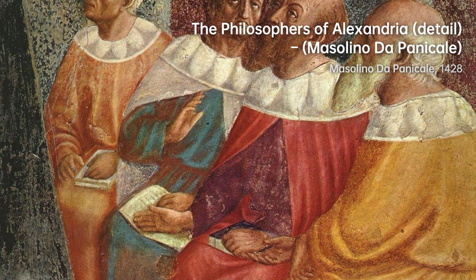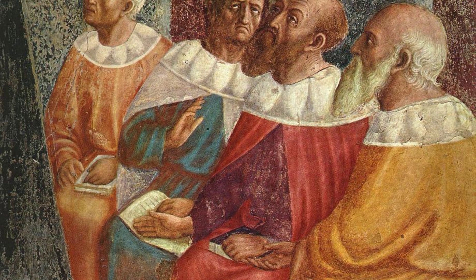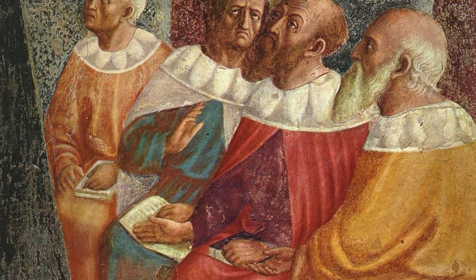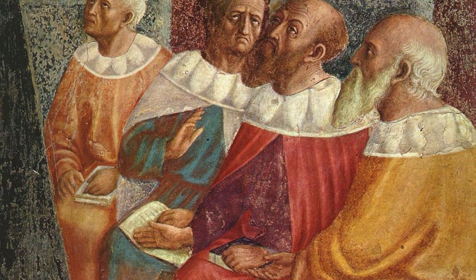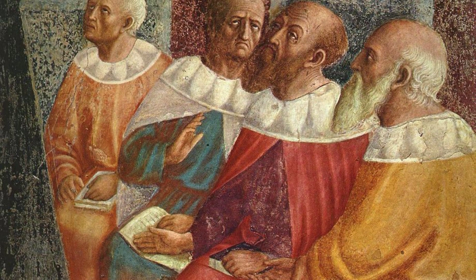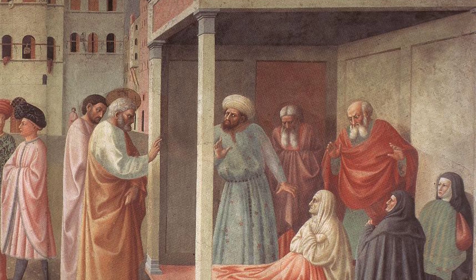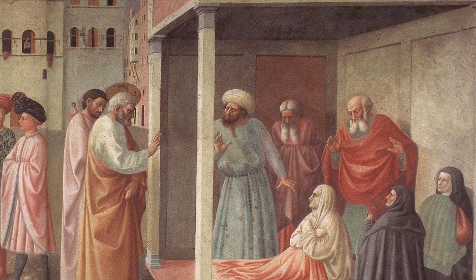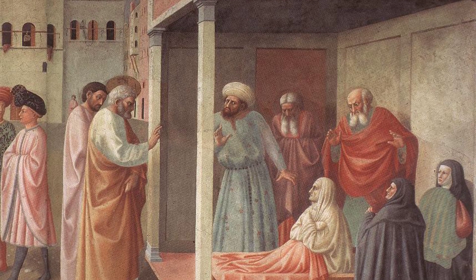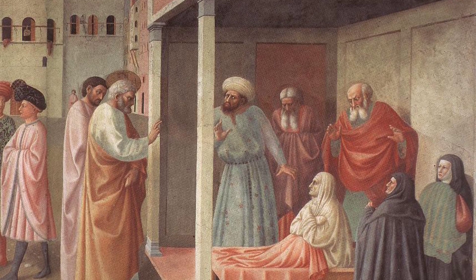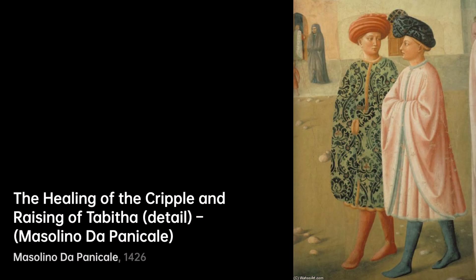In conclusion, Masolino di Panicale was an influential Italian painter who made significant contributions to the art movement of L2. His elegant and graceful style, characterized by naturalistic depictions of figures and landscapes, left a lasting impact on Italian Renaissance art. His collaboration with Masaccio resulted in iconic works such as the Madonna with Child and Saint Anne and the stunning frescoes in the Brancacci Chapel. Moreover, Masolino's role as a mentor to other artists, including Fra Angelico, further solidifies his legacy. Despite facing challenges in his later years, Masolino's influence can still be seen in the work of artists like his son Marie de Panicale.